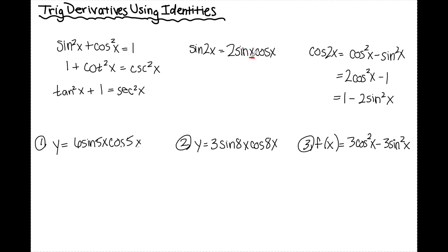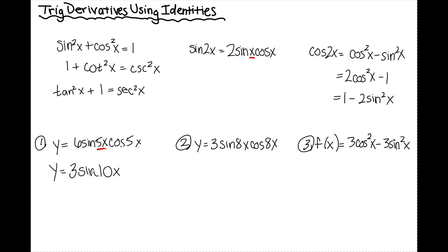The x matching up here is 5x, so in order to replace this I'm going to have to double it. This becomes sine of 10x when I write it in the double angle formula, because I'm going backwards. Since there's a 2 in the formula and this was a 6, going backwards I have to halve it — 6 divided by 2 is 3. So now I've just rewritten y as 3 sine of 10x; I haven't taken a derivative yet.